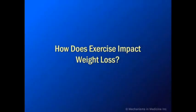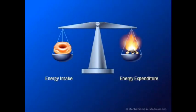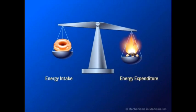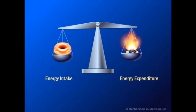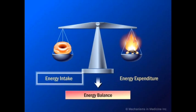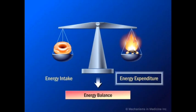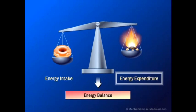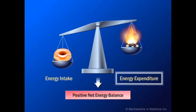In this animation, we discuss the concept of physical activity and exercise as they relate to obesity. In humans, there is a fine balance between energy intake and energy expenditure. Energy intake is in the form of food, and energy expenditure is in the form of the basal metabolic rate and physical activity. The difference between energy intake and energy expenditure is the net energy balance. If intake exceeds expenditure, then a net positive energy balance occurs.